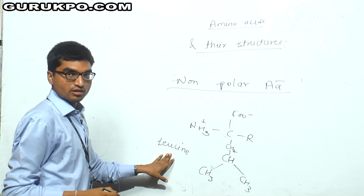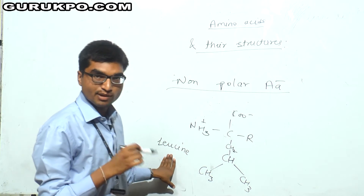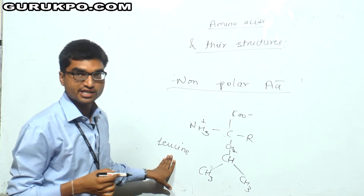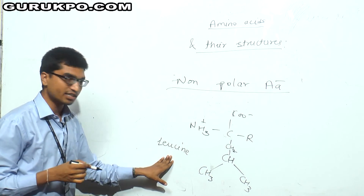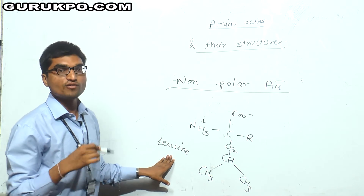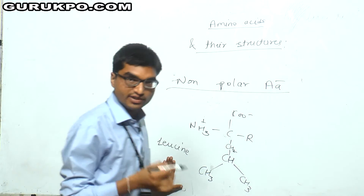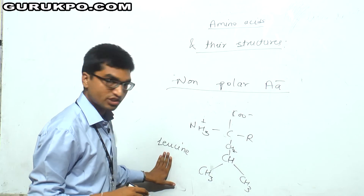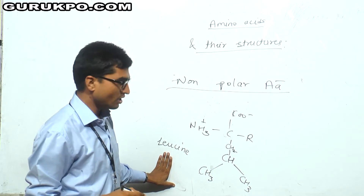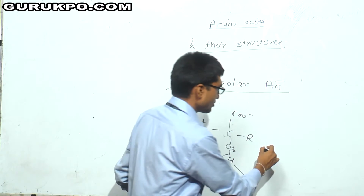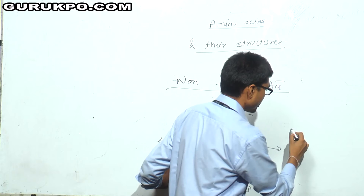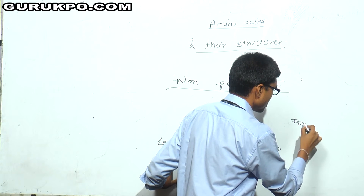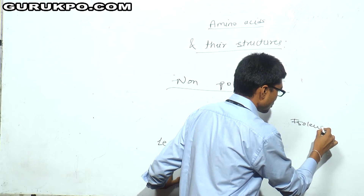By just simple modification, applying simple tricks, we can easily learn 20 different types of structures of amino acids. This is the structure of leucine. Now I am going to form the structure of isoleucine.